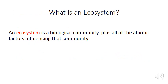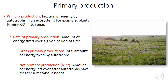A simple definition of an ecosystem is a biological community plus all of the abiotic factors influencing that community. Abiotic factors affect many elements of ecosystems, but none more so than primary production — the fixation of energy by autotrophs in an ecosystem.